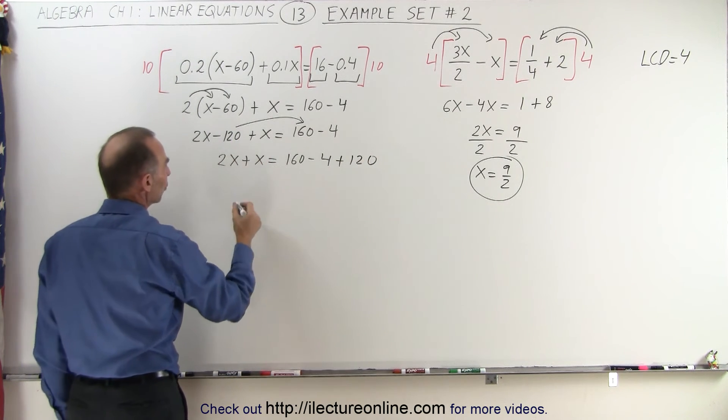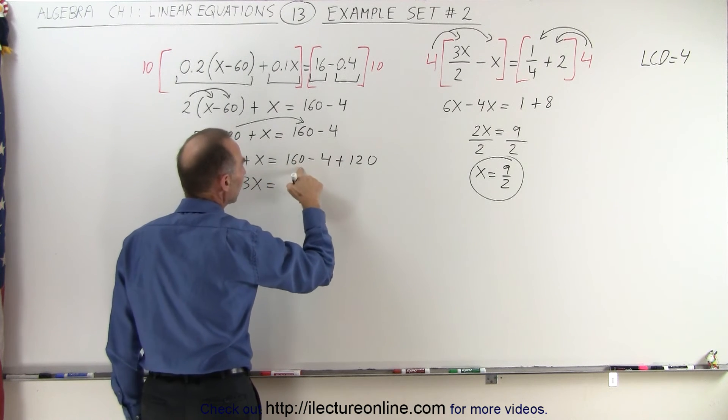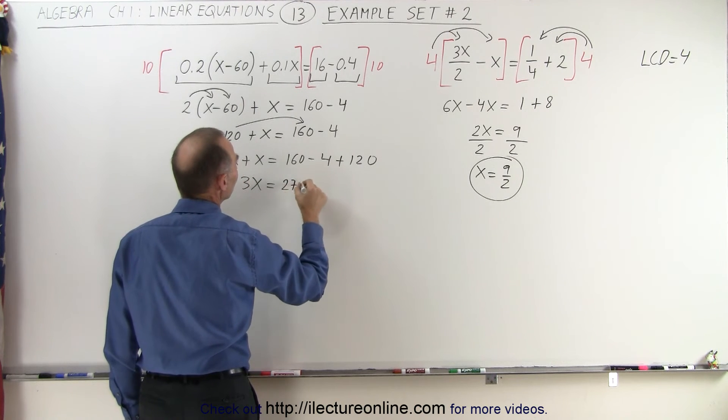When I combine like terms, I end up with 3x is equal to 160 plus 120, that's 280, minus 4 is 276.